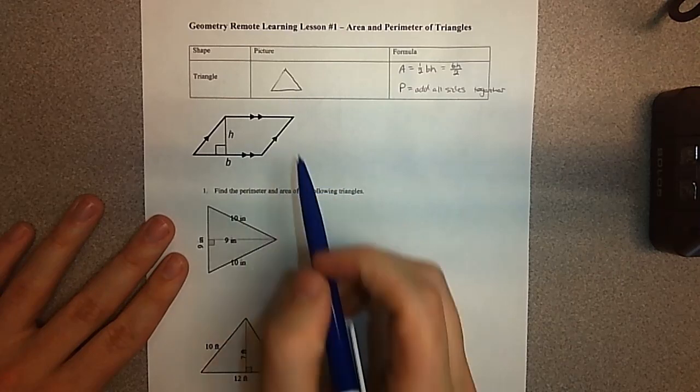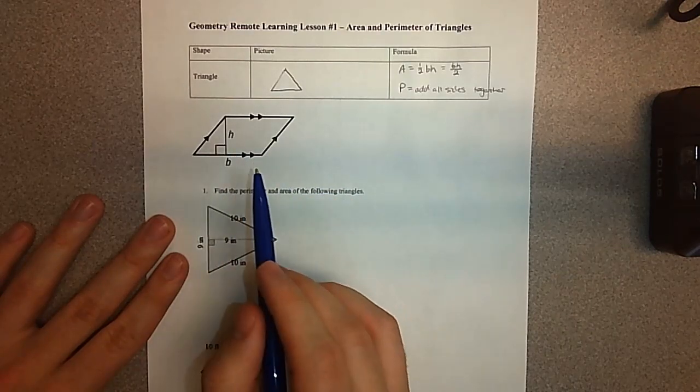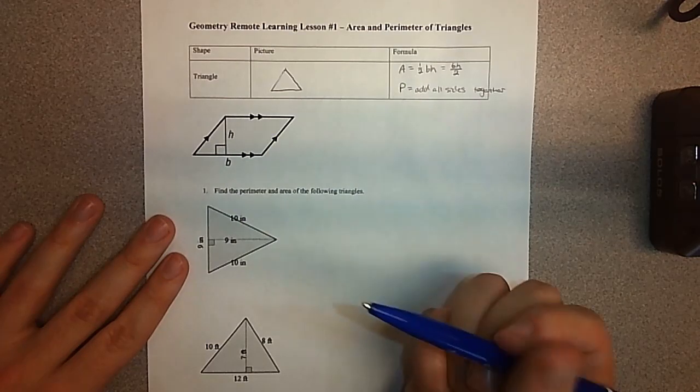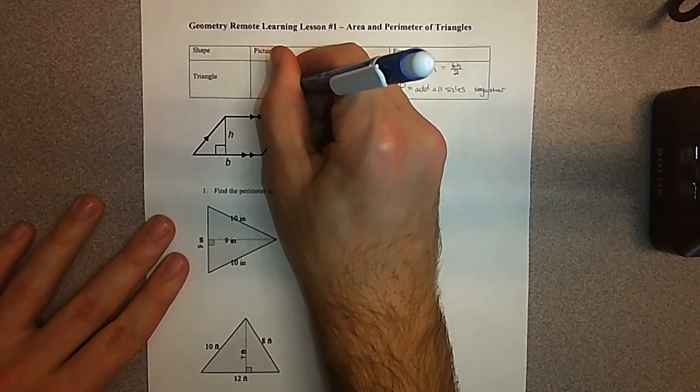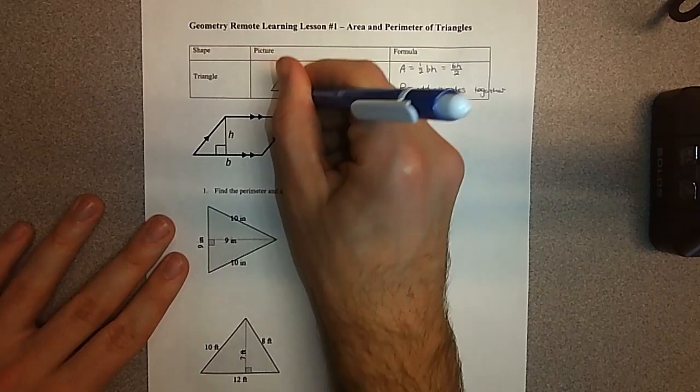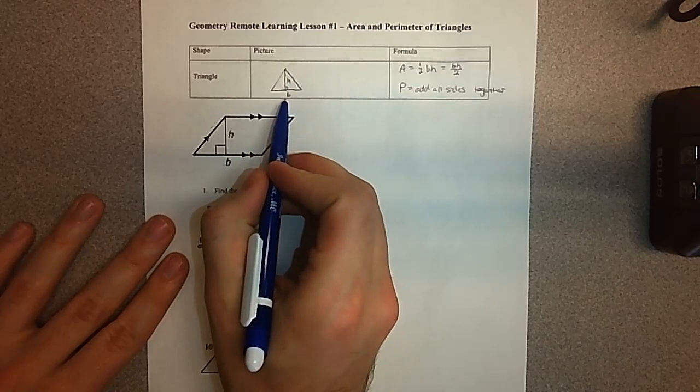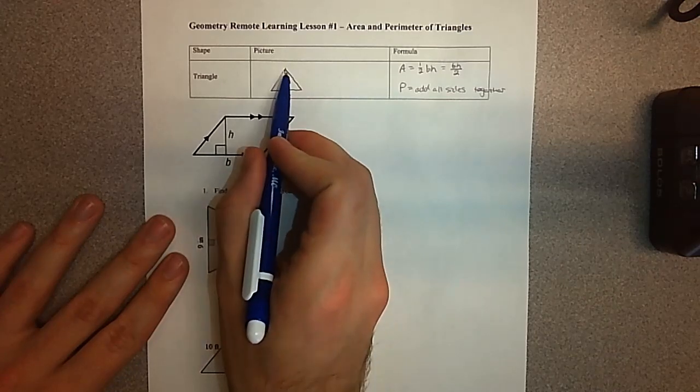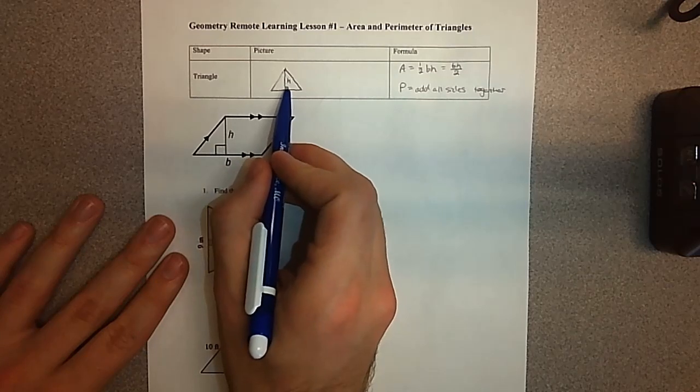So I'm going to do probably just one of these example problems for you and maybe talk about why we have this area formula. Here's a triangle, and I just want to remind you that we want to make sure that our height and base are perpendicular to each other. Our height goes from our base up to the very top vertex and it is forming a right angle with that base.